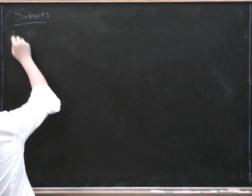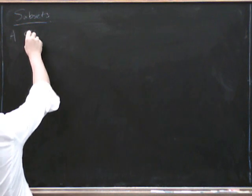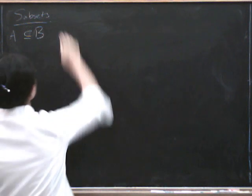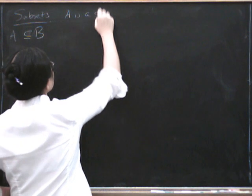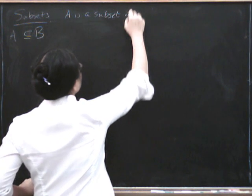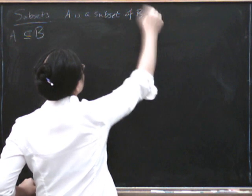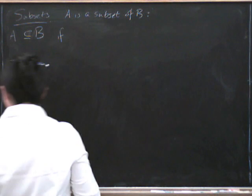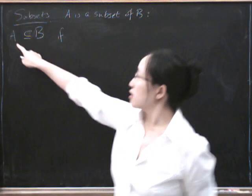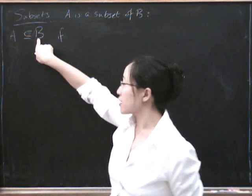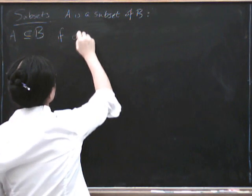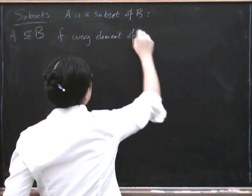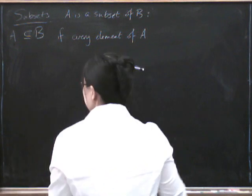We say that A is a subset of B, and it could be equal to it. What does that mean? That A is a subset of B means if every element of this set is also an element of that one. So, if every element of A is also an element of B.